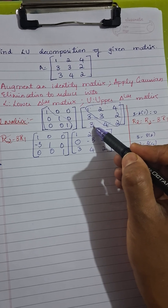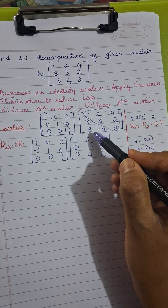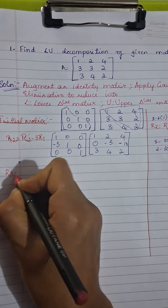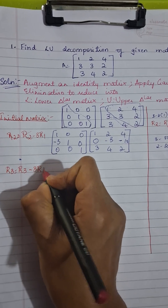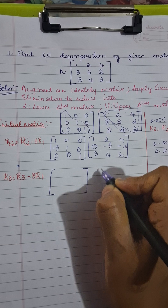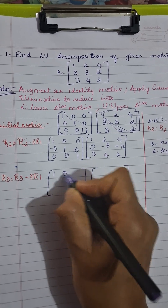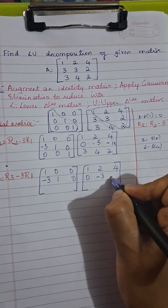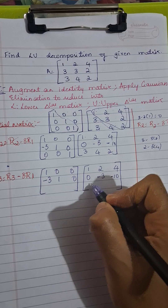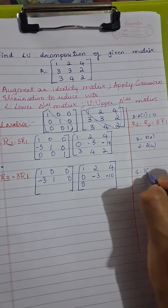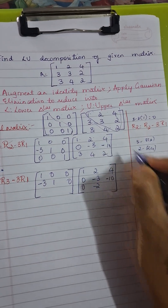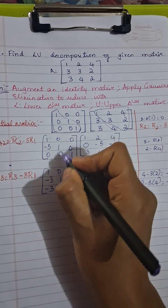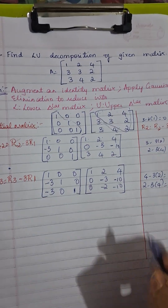Now let us focus on making the next element zero. We apply the same type of transformation: R3 = R3 − 3R1. Copying the first row — 1, 0, 0 — and second row — −3, 1, 0 — as they are. For the third row: 3 − 3(1) = 0; 4 − 3(2) = 4 − 6 = −2; 2 − 3(4) = 2 − 12 = −10. On the identity side: 0 − 3(1) = −3; 0 − 0 = 0; 1 − 0 = 1. This transformation is now done.